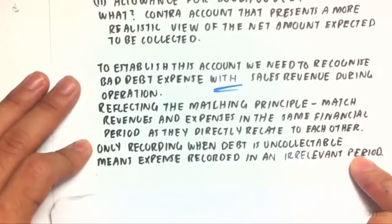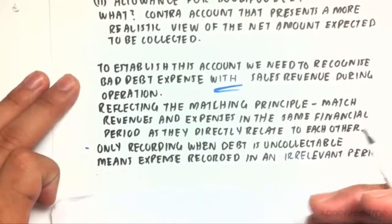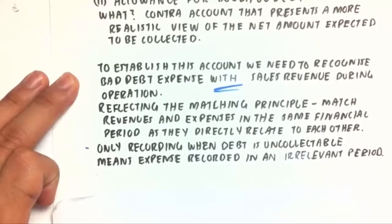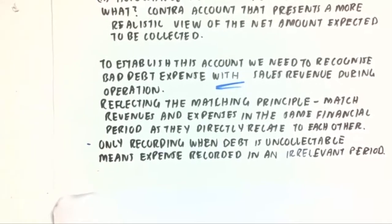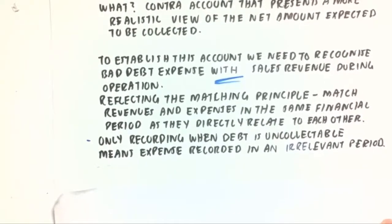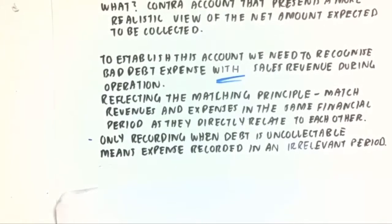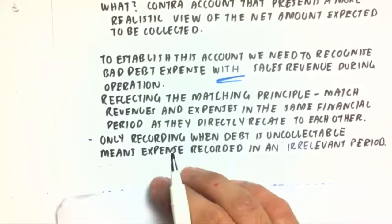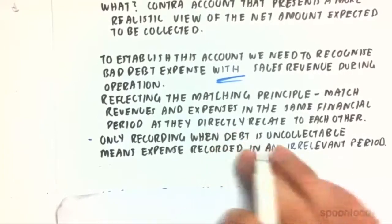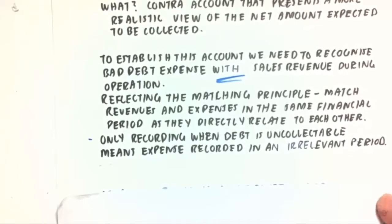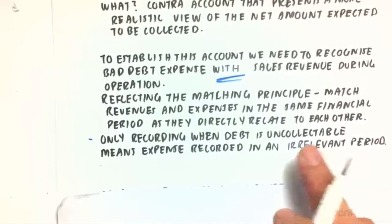If we only record bad debt when it's uncollectible, the expense is recorded in an irrelevant period. For example, if we start making our bad debt expense in say two years' time when we write someone off because they can't pay us, we'll record an expense in two years that won't reflect the financial performance during that period. That expense of bad debt should have been correlated to the current year's figures, not the second year's, where it will have nothing to do with the expenses and revenues collected during that period.